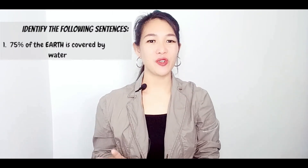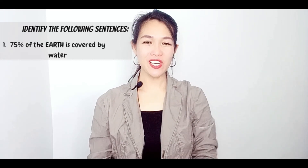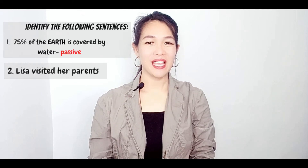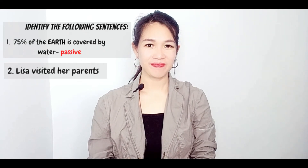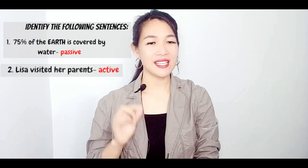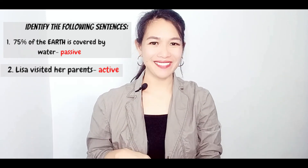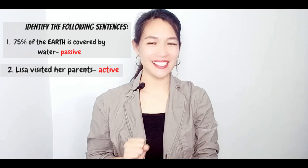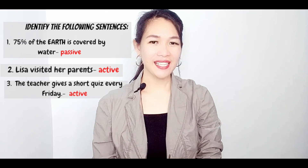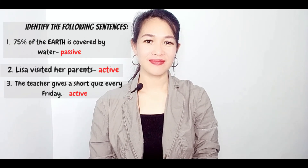Before we end this video, I would like you to try to identify the following sentences. Number one: '75% of the earth is covered by water.' Active or passive? Very good — passive. Number two: 'Lisa visited her parents.' If your answer is active, then you are correct. Lisa is the subject and also the performer of the action. Last sentence: 'The teacher gives a short quiz every Friday.' Active or passive? If your answer is active, then you are correct. Well done.